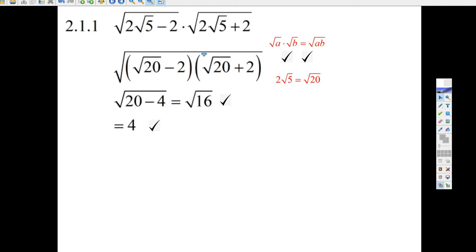Root 20 times root 20 is 20. And then plus root 2 root 20 minus 2 root 20, that's 0. Minus 2 times 2 is minus 4. 20 minus 4 is 16, and the square root of 16 is 4. If you do this and write down 4 and don't show your work, they don't give you any marks.